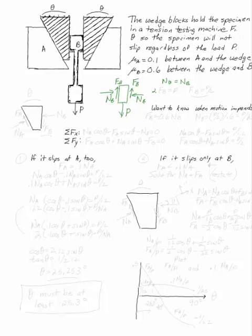And on the other side, I will get 2 times FB equals P, or more to the point, FB equals P over 2.